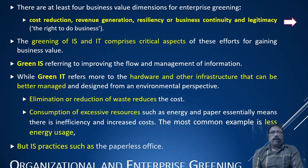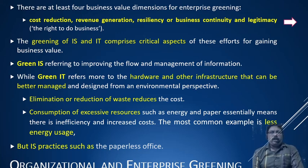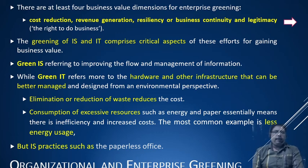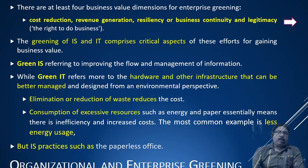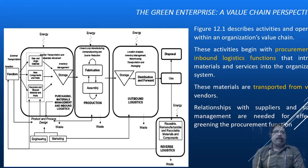IS practices such as a paperless office — where billing and all information systems are managed without paperwork — is called green IS. This is an example of how information systems can be made environmentally friendly. Now let us discuss the green enterprise value chain.